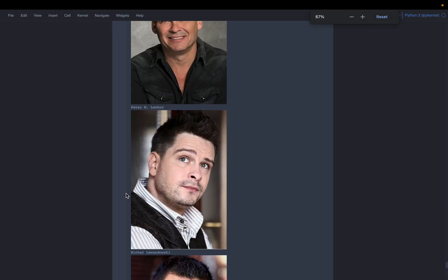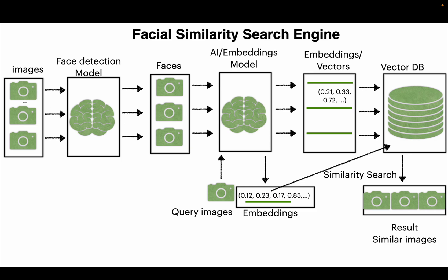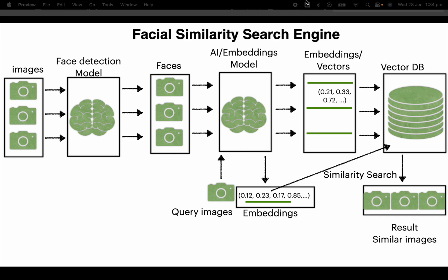That's it. Going back to the architecture: we start with images, apply a facial detection model to extract only the faces, use those cropped face images to create embeddings using a model trained on facial recognition, upload the vectors to the vector database, and then query for similar celebrities or similar facial features using the vector database. Thank you very much.